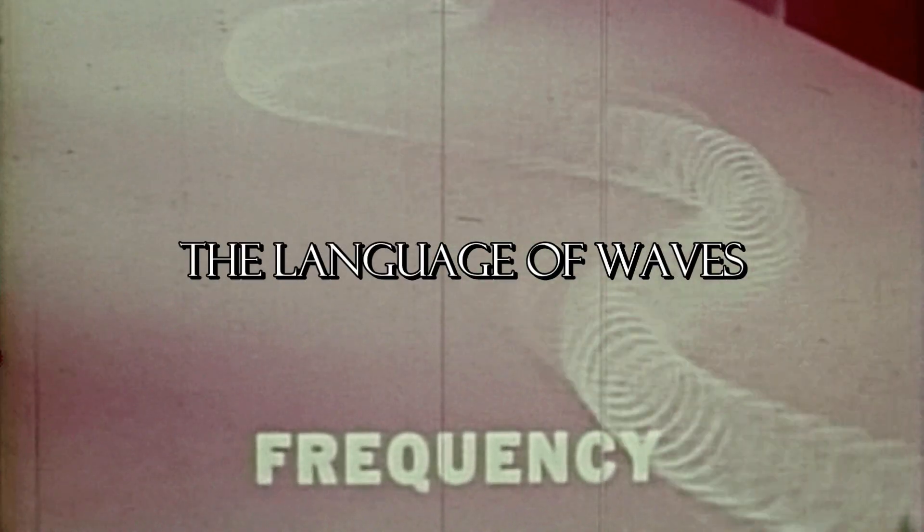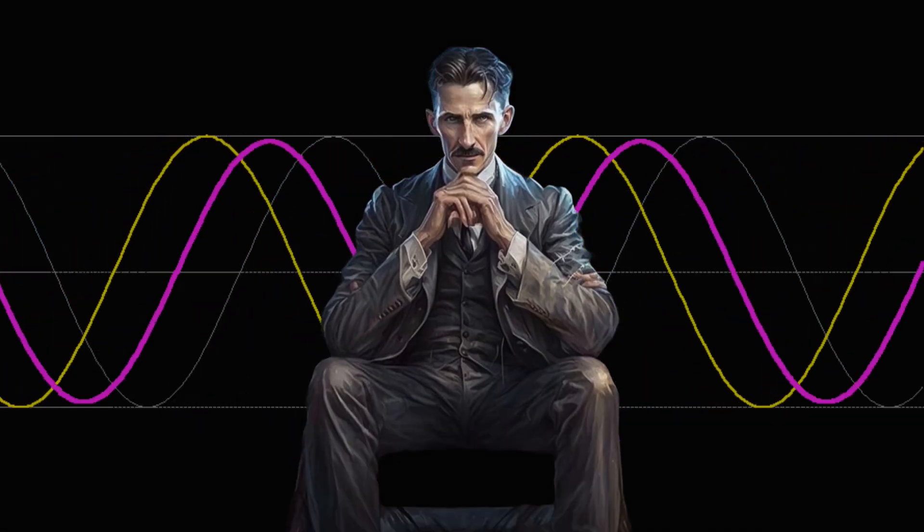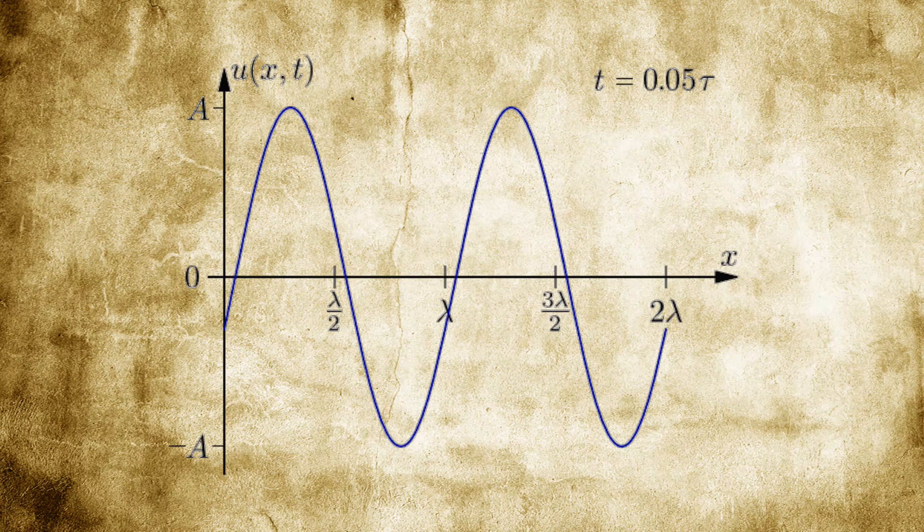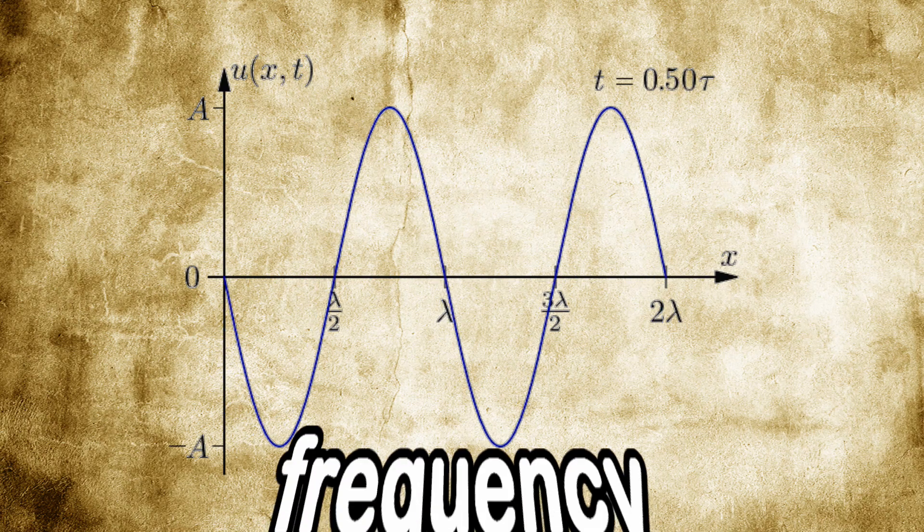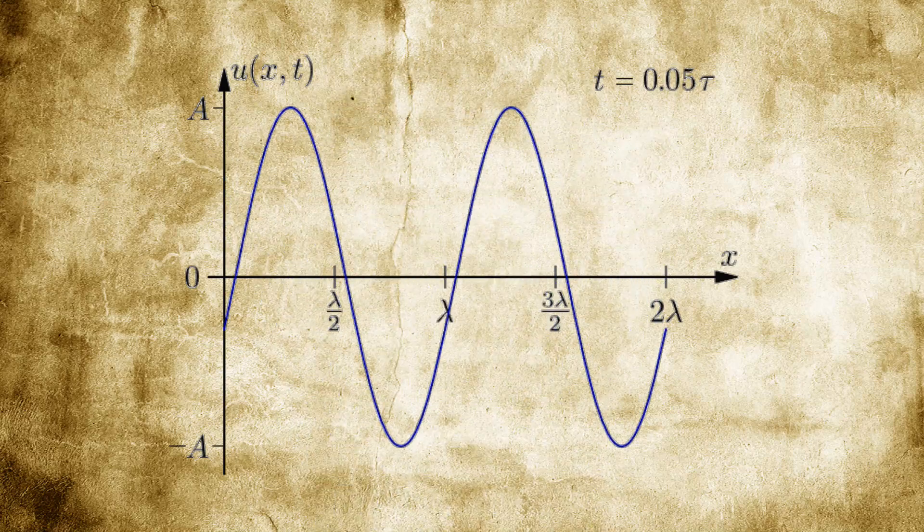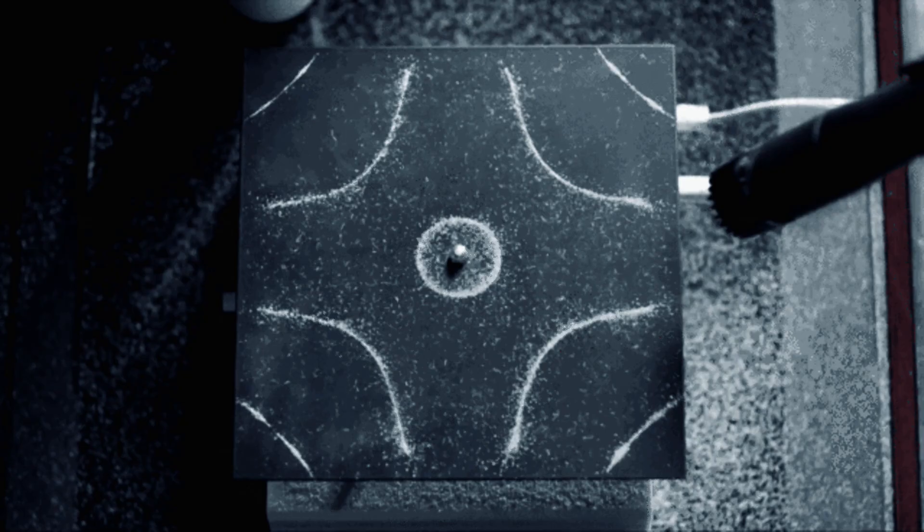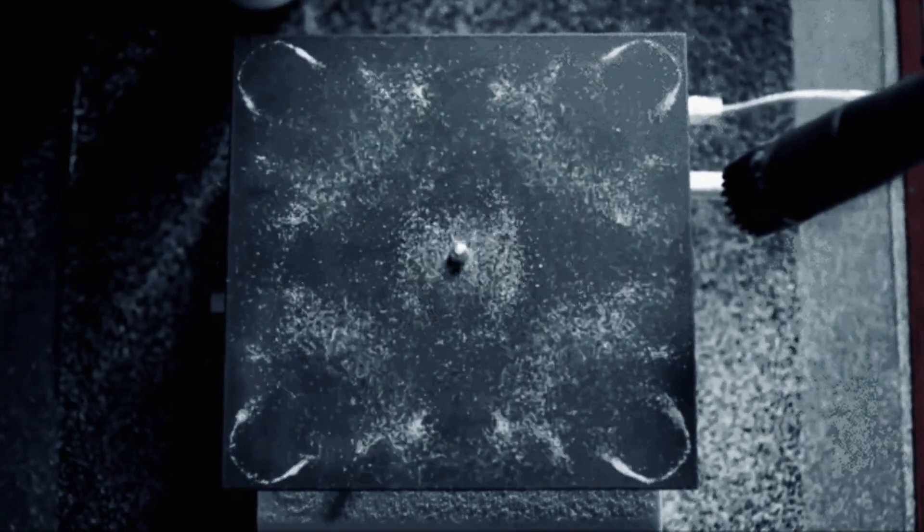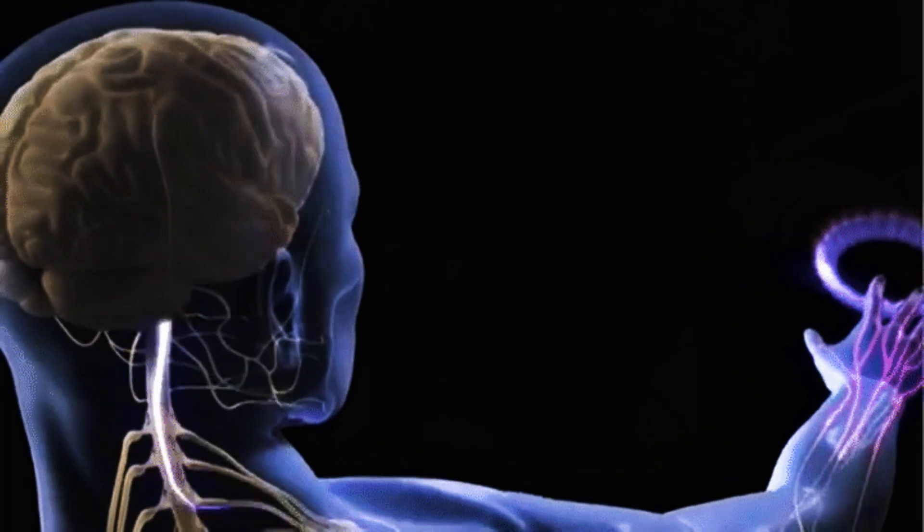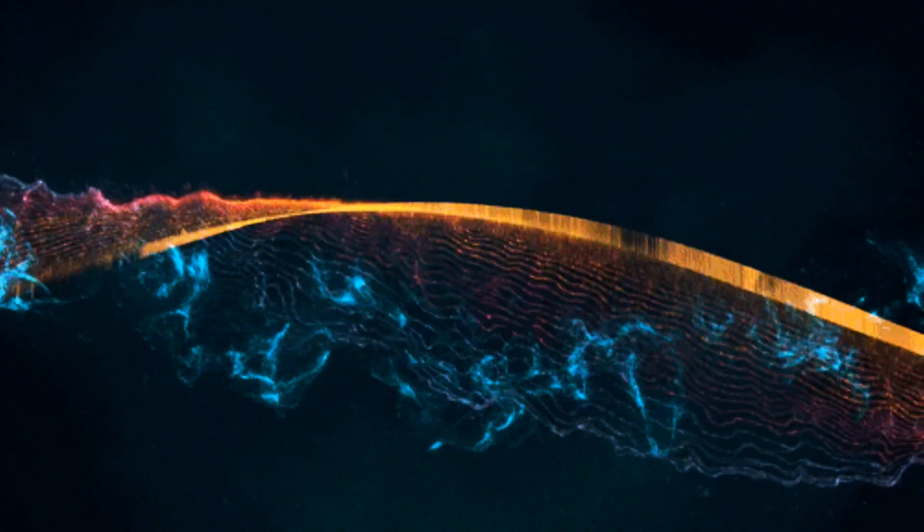Next we have frequency, the language of waves. Tesla was particularly fascinated by the concept of frequency. In the context of electromagnetic waves and oscillations, frequency refers to the number of cycles per unit of time. In the realm of waves, frequency determines the pitch of sound, the color of light, and even the vibrational patterns that shape matter. The concept of frequency extends beyond our sensory perception, resonating through the fabric of reality at both macro and micro scales.